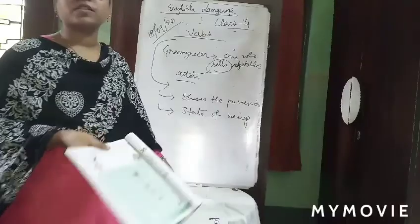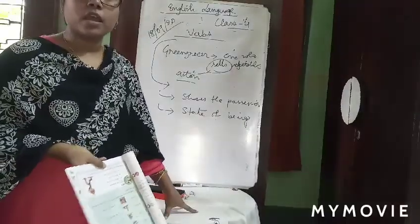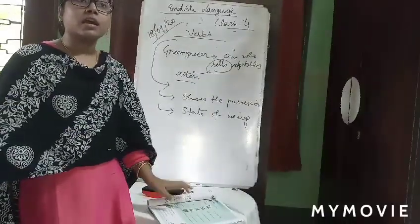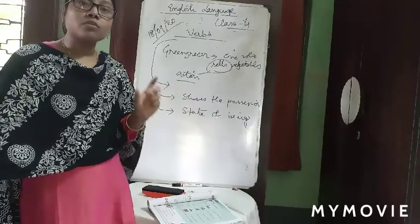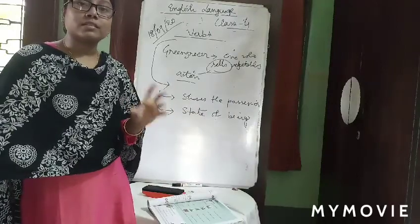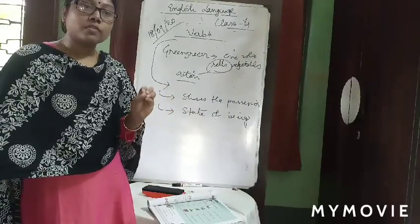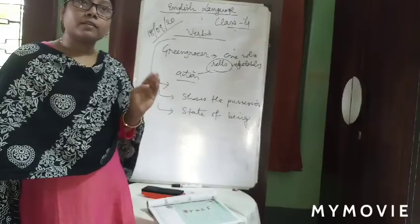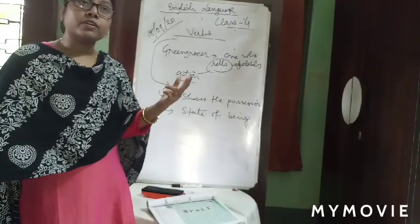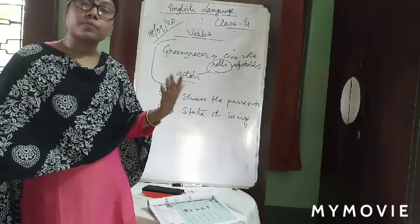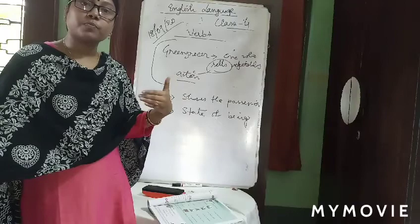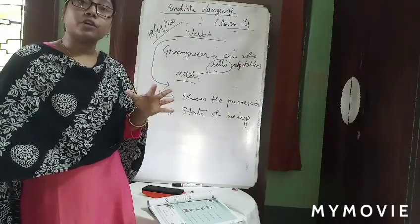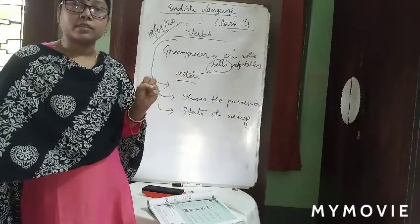We cannot have a sentence without a verb. If you see any sentence, any sentence without a verb is senseless. So two things we come to know: first, how verb shows us the position — straight up being an action; and secondly, without a verb we cannot make a sentence.